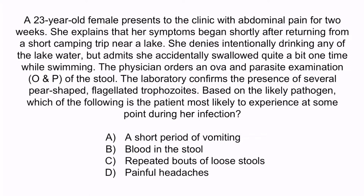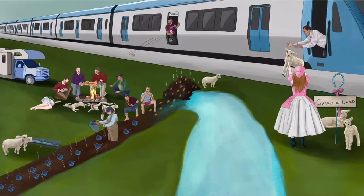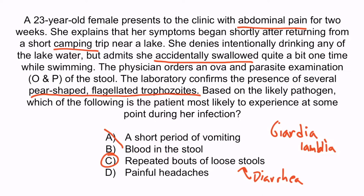Hopefully from the question stem, you saw that this describes Giardia lamblia — the girl has abdominal pain, she went camping, and accidentally drank lake water, and an O&P exam of her stool revealed pear-shaped flagellated trophozoites. The answer is C, repeated bouts of loose stools — this is just another way of describing diarrhea. Remember that dirty poo river? It stands for diarrhea. Choice A is wrong because vomiting is not likely with a Giardia infection, especially compared to diarrhea. Choice B is wrong because Giardia does not cause intestinal bleeding. And choice D is wrong because Giardia is not known to cause painful headaches.